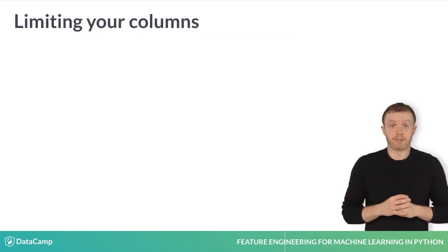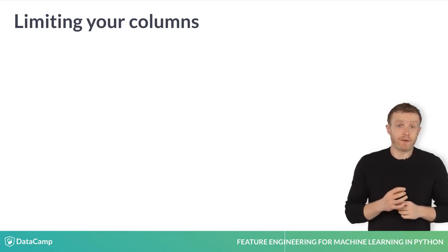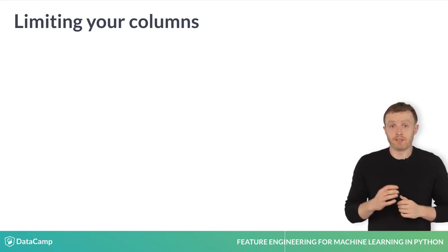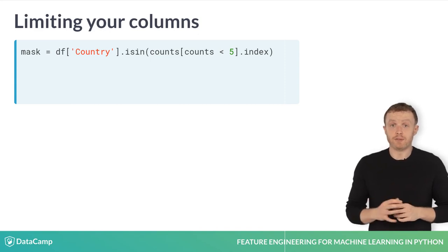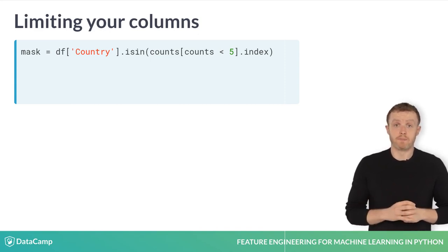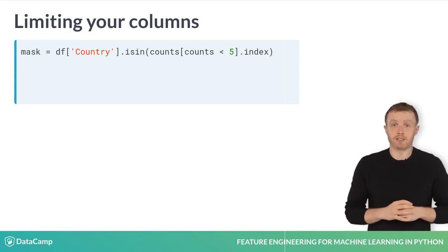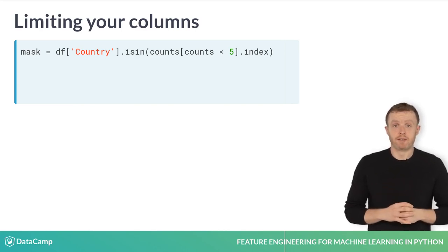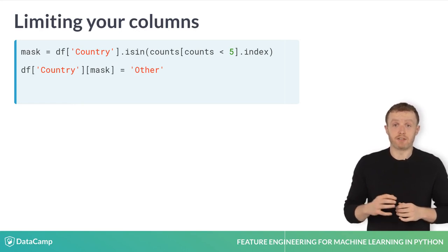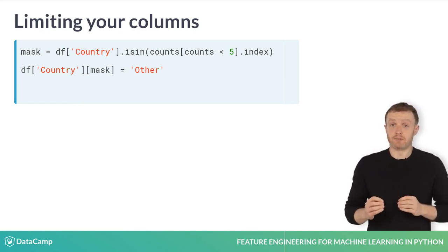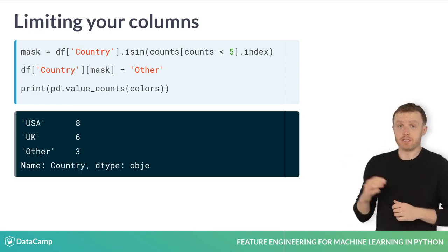Once you have your counts of occurrences, you can use it to limit what values you will include by first creating a mask of the values that occur less than n times. A mask is a list of booleans outlining which values in a column should be affected. We find the categories that occur less than n times using the index attribute and wrap this inside the isin method. After you create the mask, you can use it to replace these categories that occur less than n times with a value of your choice.